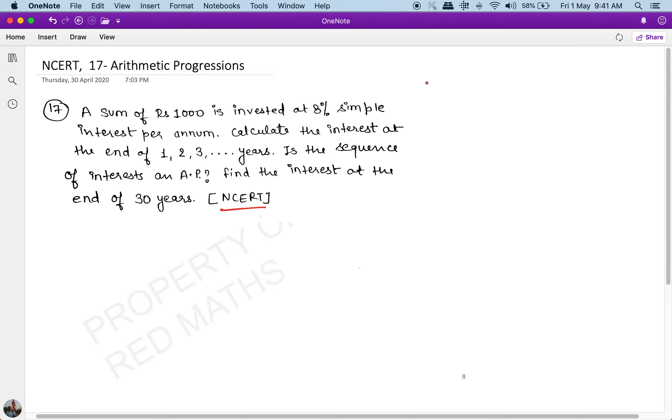A very simple question but very nice and highly conceptual. The question says: a sum of rupees 1000 is invested at 8 percent simple interest per annum. Calculate the interest at the end of the first year, second year, third year. Is the sequence of interest in AP? Find the interest at the end of 30 years.